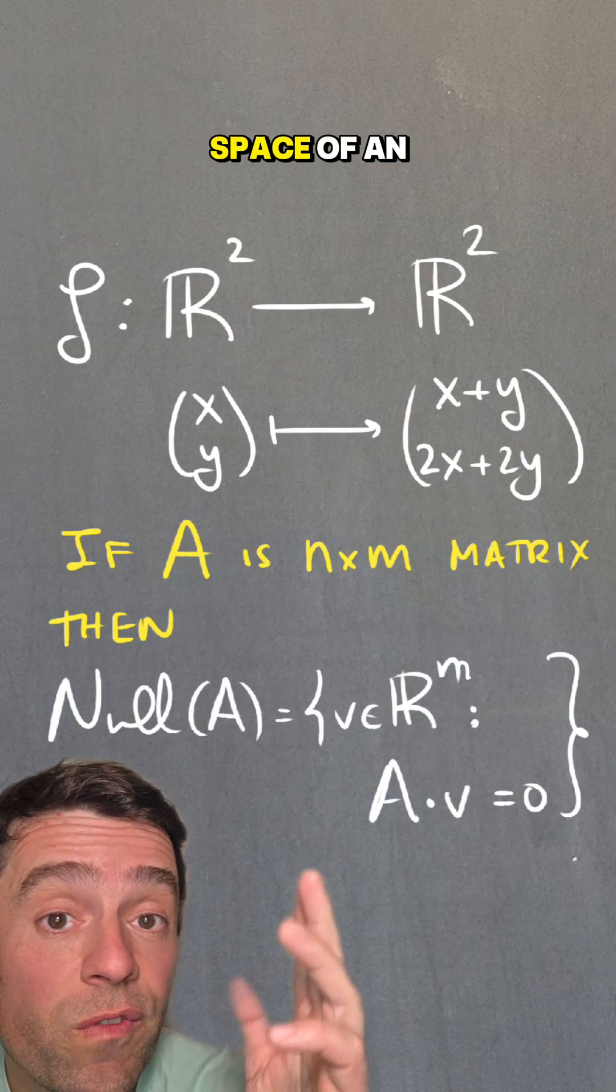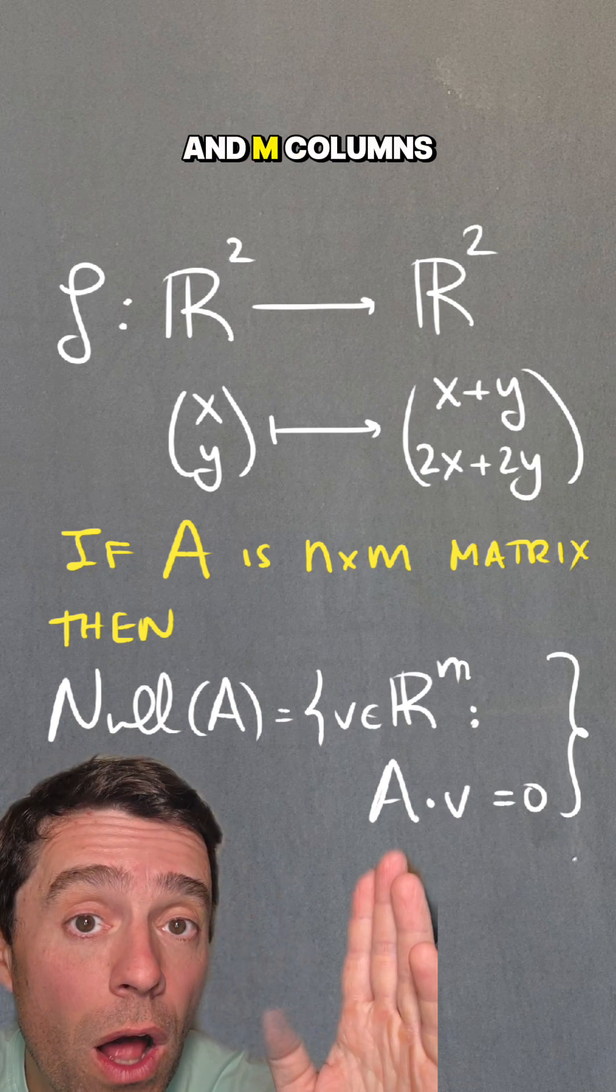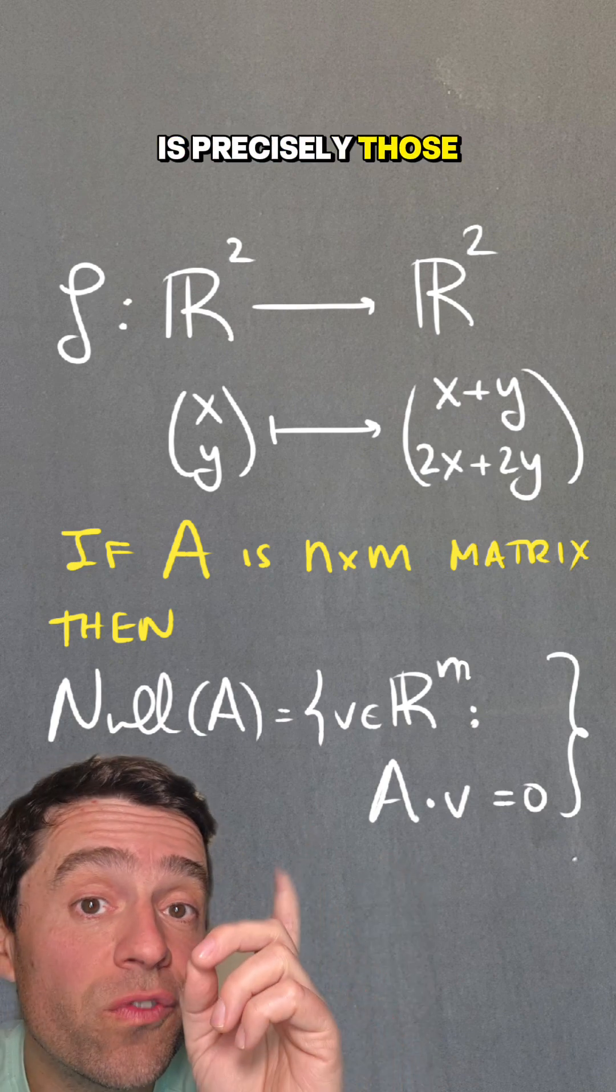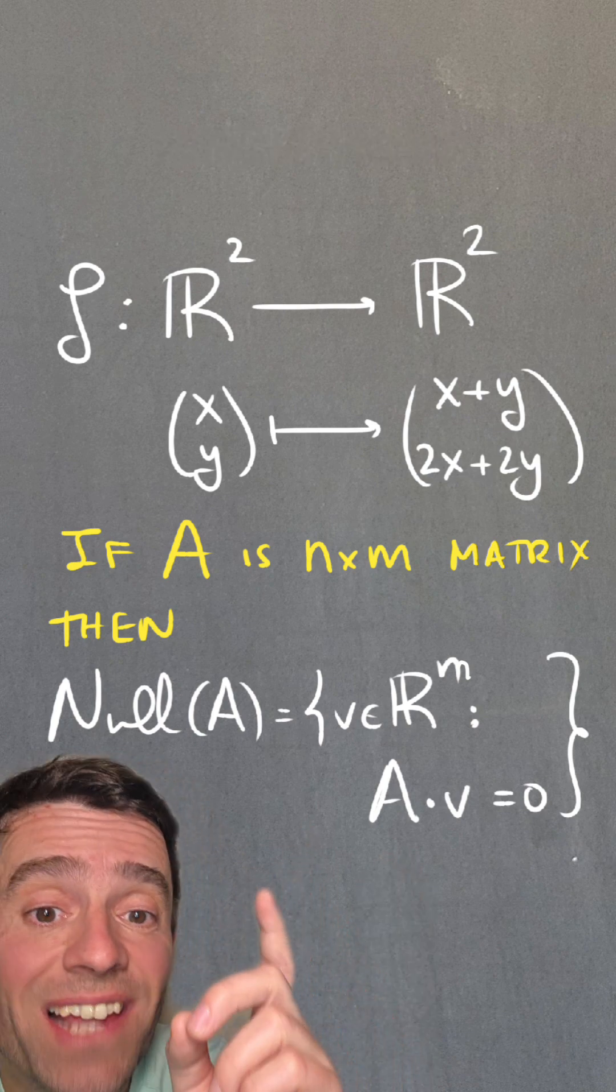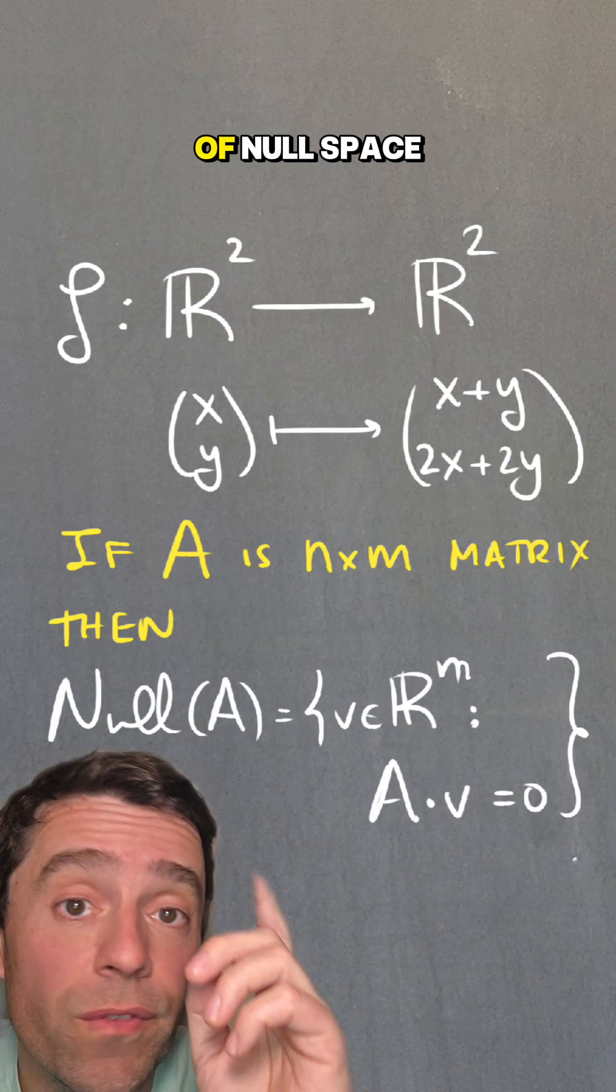Because the null space of an n by m matrix, so a matrix with n rows and m columns, is precisely those vectors in R^m such that A times v is equal to 0. That's the definition of null space.